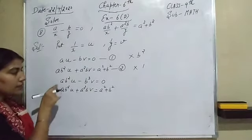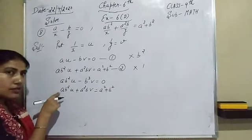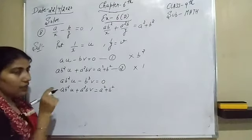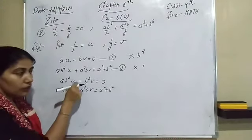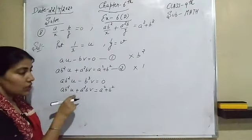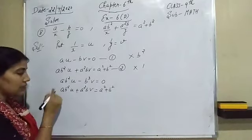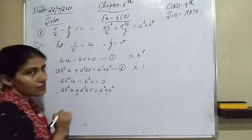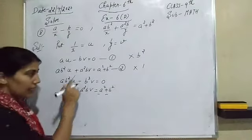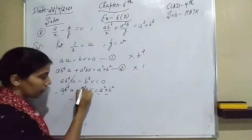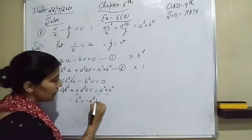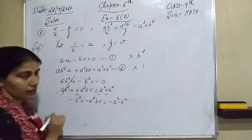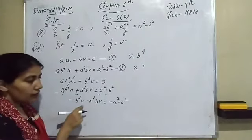Both ab²u terms are the same and both are positive, so they cannot cancel directly — we need to subtract. Change the signs of the second equation: positive becomes negative. After subtracting, the ab²u terms cancel, leaving: minus b³v minus a²bv equals minus a² minus b².